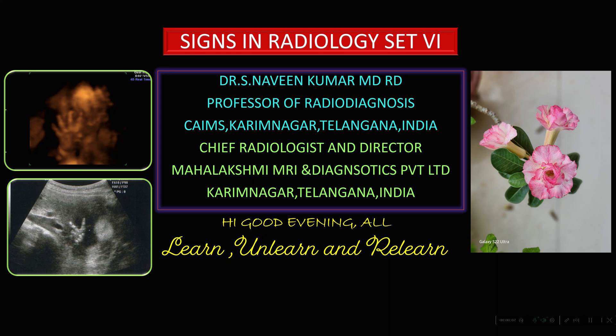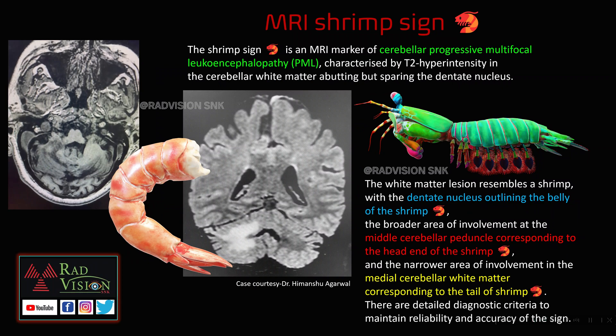Good evening all, welcome to this new session. We will try to see signs in radiology, set 6. Coming to the first case, here you can see there is a white matter hyperintense lesion typically located in the cerebellum, which mimics the shrimp. So what is this shrimp or Mrs. Shrimp sign?